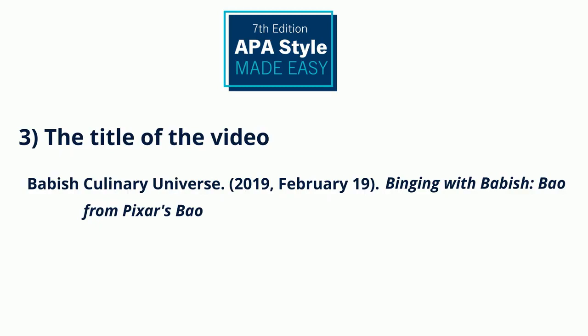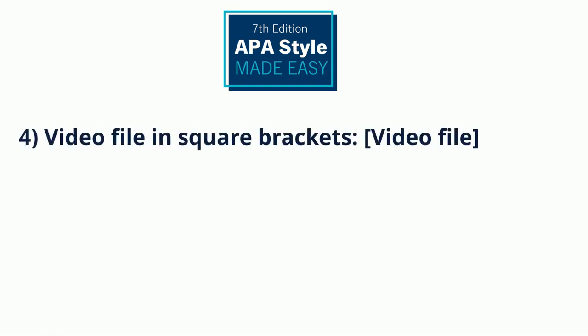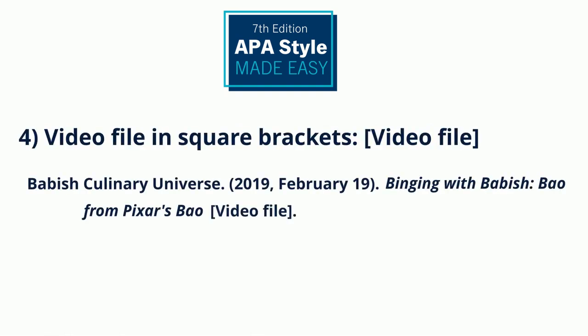Proper nouns in titles should be capitalized as you usually would. After our title, we'll put a format description in square brackets. APA style uses square brackets to describe the work you are citing — when identifying a source outside of typical peer-reviewed literature, or indicating the source may not consist of text on a page. In this case, we'll write out 'video file' after the title.